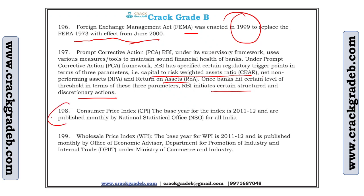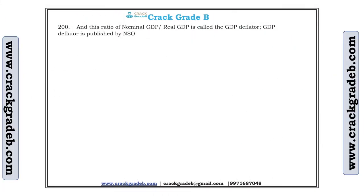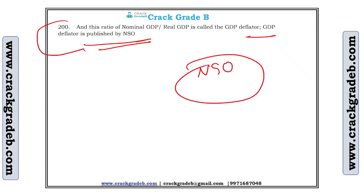Consumer Price Index (CPI): the base year is 2011-12 and it is published monthly by the National Statistical Office (NSO) for all India. Wholesale Price Index (WPI): the base year is 2011-12 and is published monthly by the Office of the Economic Advisor, Department for Promotion of Industry and Internal Trade (DPIIT), under the Ministry of Commerce and Industry. Finally, the ratio of nominal GDP to real GDP is called the GDP deflator, which is published by NSO. More detail will be covered in Part 3 of the lecture series.